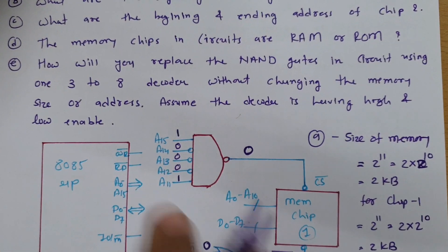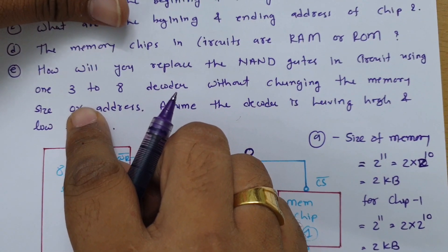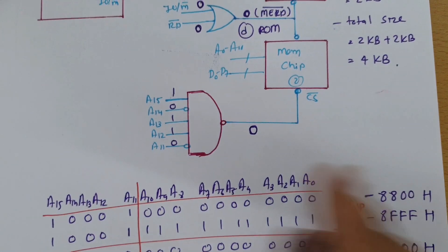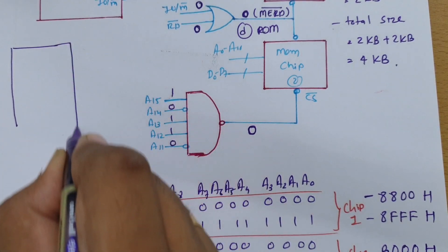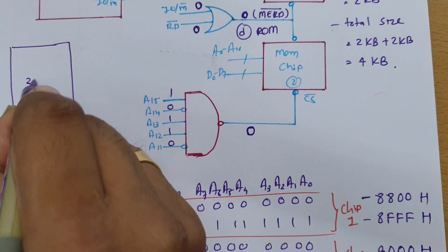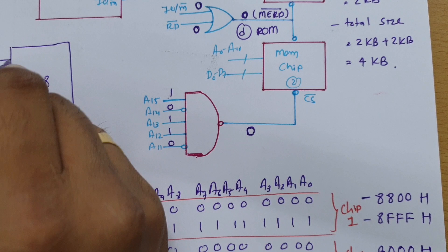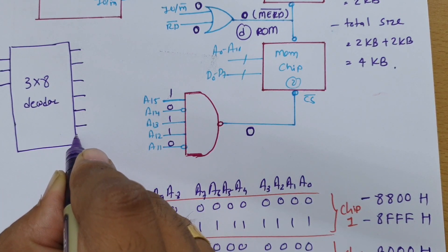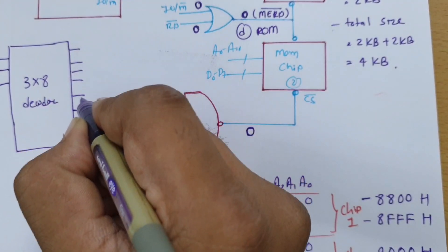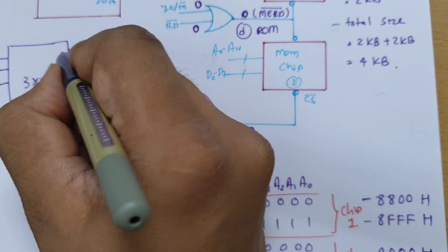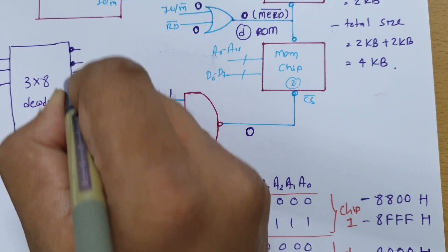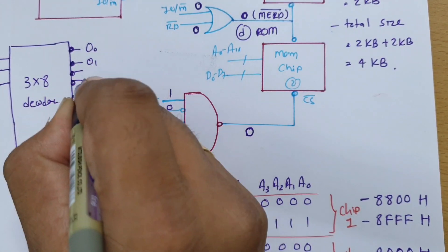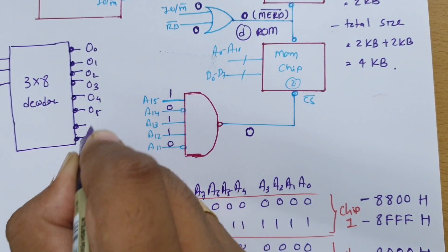Question 5 asks how to replace the NAND gates with a 3×8 decoder without changing the memory address or size, assuming the decoder has high and low enable. Let us draw the 3×8 decoder first. A 3×8 decoder has 3 input terminals and 8 output terminals — O0 through O7 — and since they are active low, there will be bubbles on the outputs.